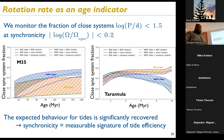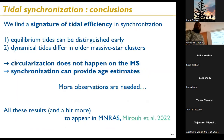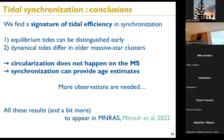In conclusion for the tides work: equilibrium tides can be distinguished early; dynamical tides need more time to separate. Circularization on the main sequence does not constrain tidal efficiency or give an age estimate, but synchronicity will give an assessment of tidal efficiency — though more observations are needed to confirm this.